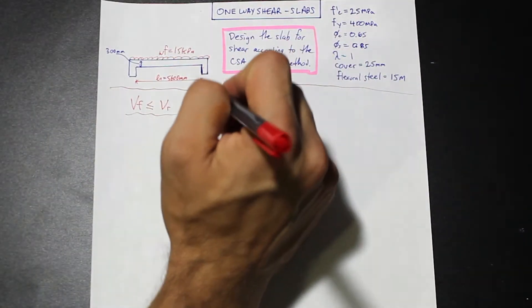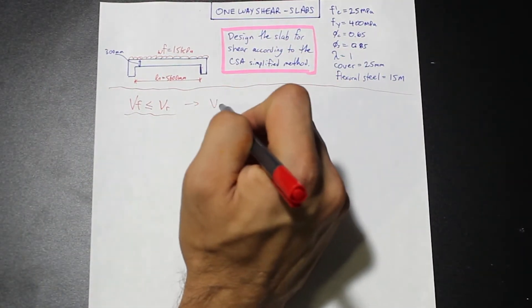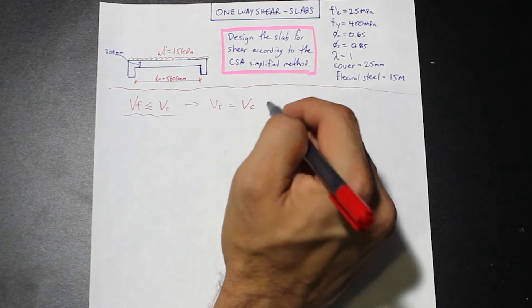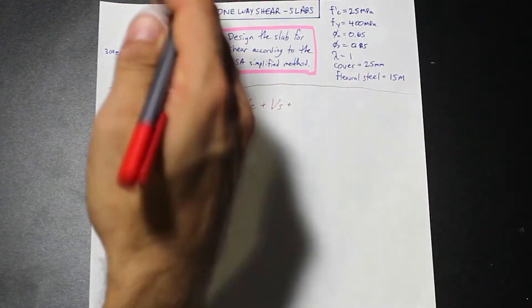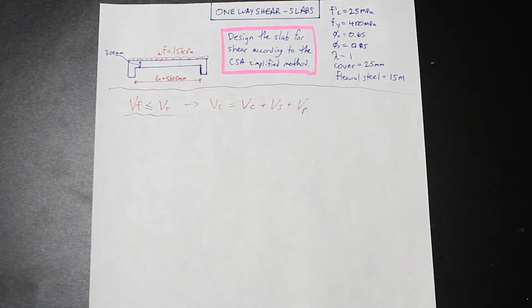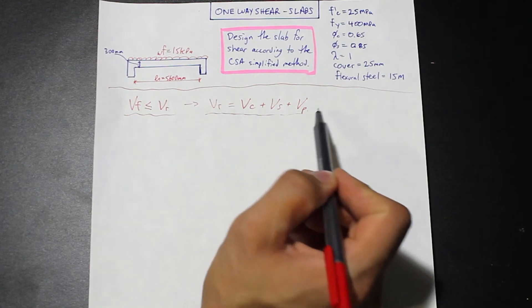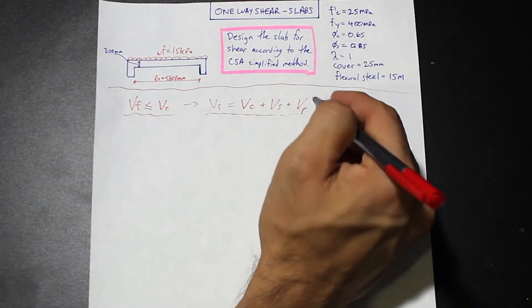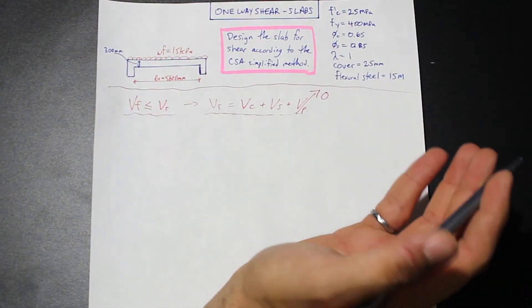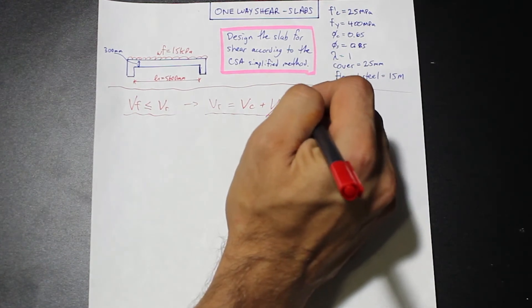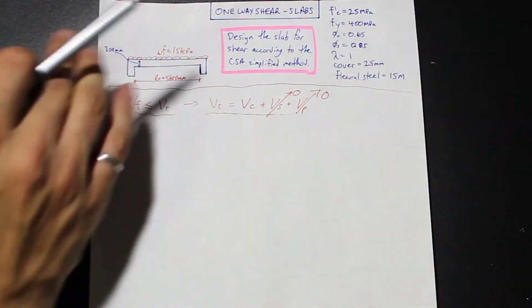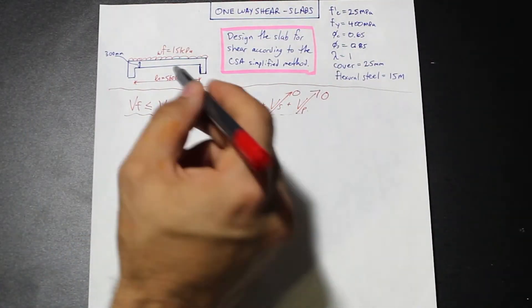That's a general design theme in anything that we're doing. What is the factored shear resistance? Our factored shear resistance VR is simply VC, which is our concrete shear strength, plus VS, the shear strength of our reinforcement that we're using to resist shear, plus VP, which is any shear resistance due to pre-stressing. We're not doing any pre-stressing, so this is equal to zero, and our slab is unreinforced for shear. We don't have stirrups in our slab, so that is also equal to zero. In our case, the shear resistance is simply equal to the shear resistance of concrete.